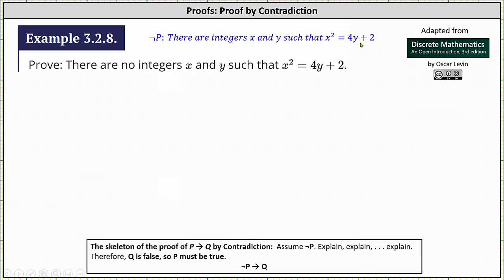This is where we start the proof, meaning we'll try to show that some statement Q must be false, indicating the original statement P must be true.